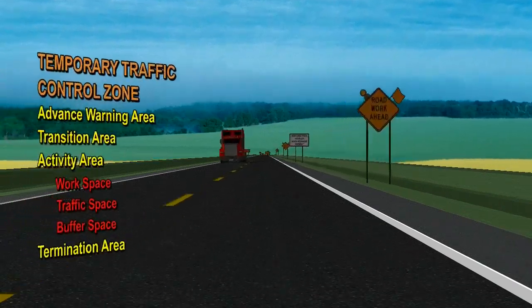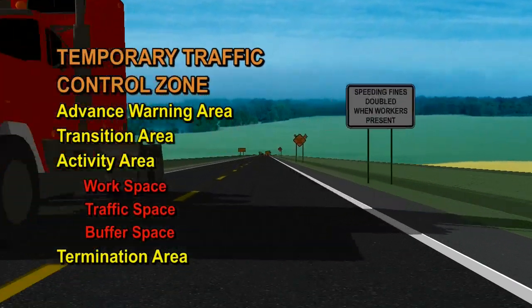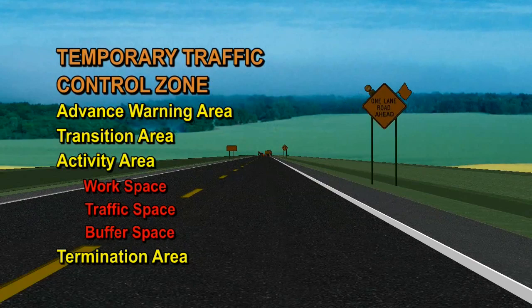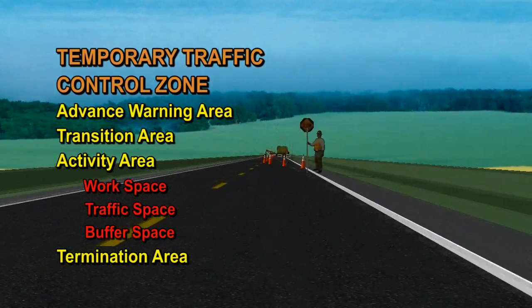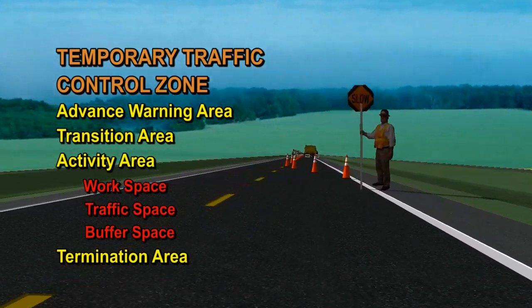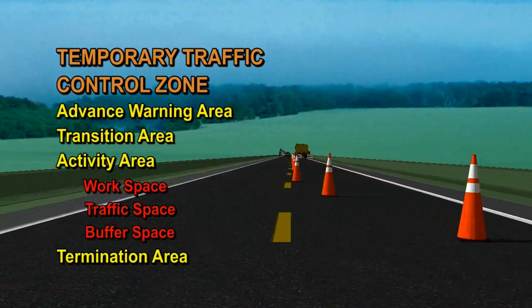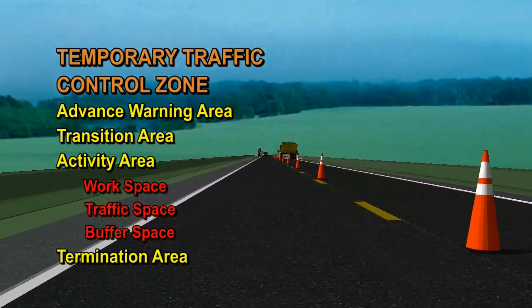The termination area tells motorists they are out of the temporary traffic control zone and they may resume normal driving. This concludes the review of the four basic parts of a temporary traffic control zone and their functions. In the next session of the series, we'll review some typical applications that you'll be using in your work.